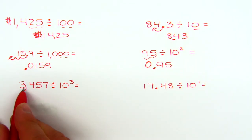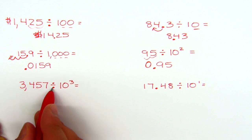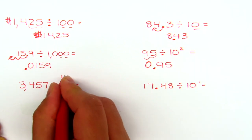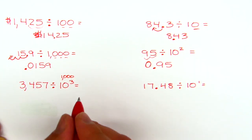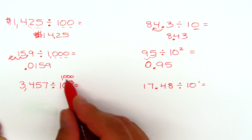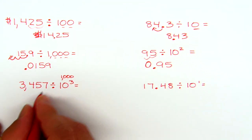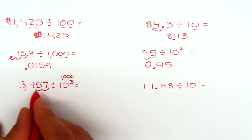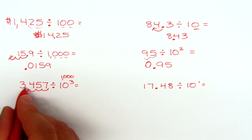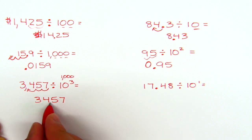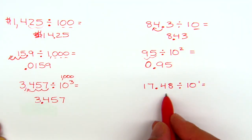In this one: three thousand four hundred fifty-seven divided by ten to the third power. Ten to the third power is a one with three zeros, or ten times ten times ten, which is a thousand. The decimal is at the end of this whole number, so we move it one, two, three places to the left — it goes right between the three and the four. Copying the digits: 3, 4, 5, 7 — the decimal goes right there. So 3,457 divided by 1,000 is three and four hundred fifty-seven thousandths.